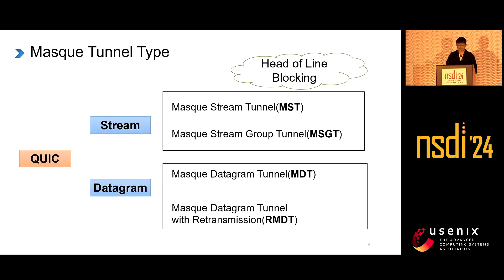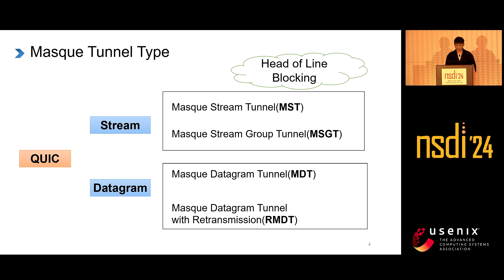In MASQUE, there are many types of tunnels, which can be divided into two types based on whether they use stream or datagram transmission — QUIC stream or QUIC datagram. Using a single tunnel to transmit application connection packets can lead to the head-of-line blocking problem. To alleviate this in MSGT, we use multiple streams to transmit a connection's packets, which we refer to as a stream group. However, experimental results show that MSGT still suffers from serious head-of-line blocking problems.